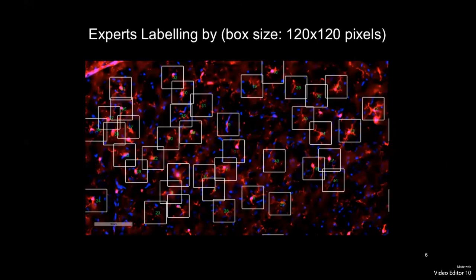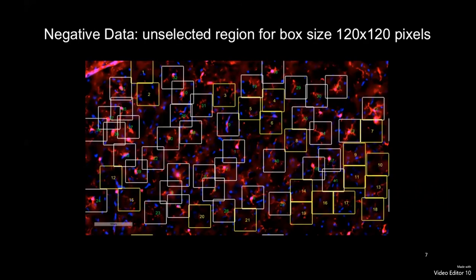This is an example IBA1 image from a TBI rat brain. Our pathology expert manually labeled the cells using a box size of 122 by 122 pixels. We also defined negative boxes on the no-cell region to increase the learning accuracy.